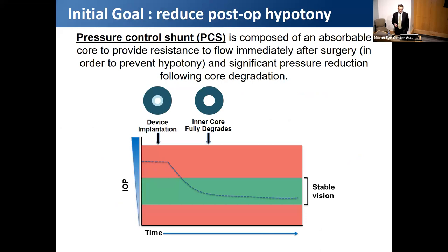Starting with the electrospinning project: the first device we created was a filtering tube called the Pressure Control Shunt, or PCS. The principle is based on the Hagen-Poiseuille equation with a modification incorporating a biodegradable sacrificial inner sleeve within the shunt. The purpose of this inner sleeve is to prevent hypotony in the early post-operative period by creating a small-diameter lumen, then as the sleeve degrades the lumen expands, allowing further IOP reduction once it's safe.